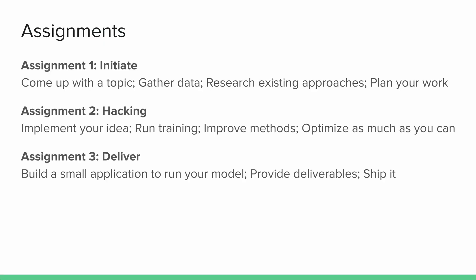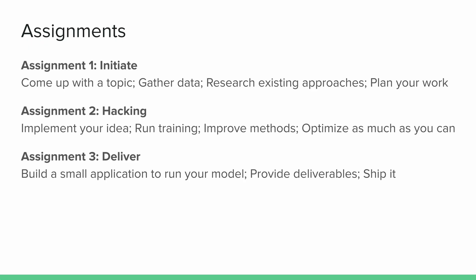Assignment two is the 'Hacking' part — the juicy details. You will run training on the models you've decided to use and try to improve them as much as possible. You'll have approximately two months for this, and by around Christmas this part will be over. Then you transition to assignment three, where you build a small application that can actually run the model you've trained and showcase what you've done. The goal is to ship it in a way that anyone can understand what you did.